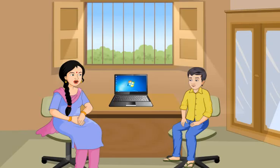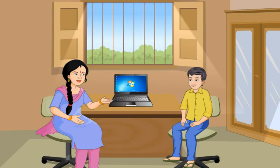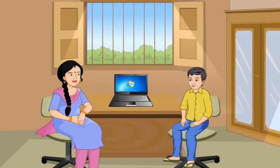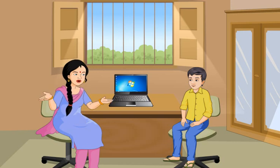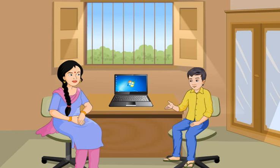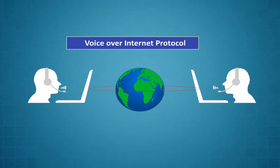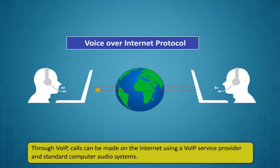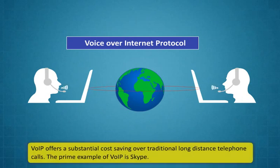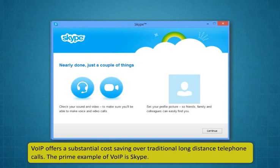There are various interesting ways through which you can use the internet. One of them is that you can also send voicemails or use the internet as a mobile phone. Really, Didi? Wow, that's so exciting! Yes, Rohan. There are services that make internet telephone possible. Voice over internet protocol (VoIP) is a technology used for internet phone services. Through VoIP, calls can be made on the internet using a VoIP service provider and standard computer audio systems. VoIP offers a substantial cost saving over traditional long-distance telephone calls. The primary example of VoIP is Skype.